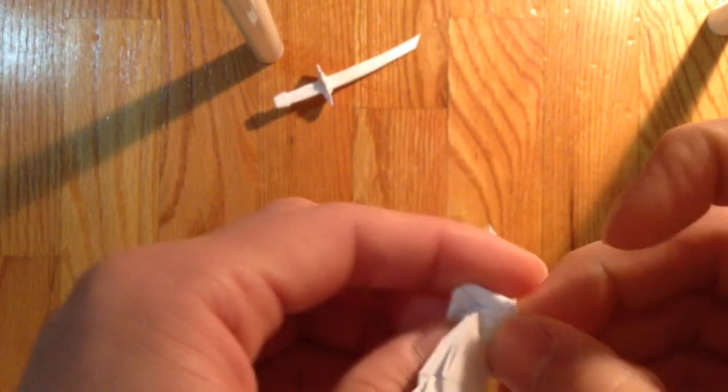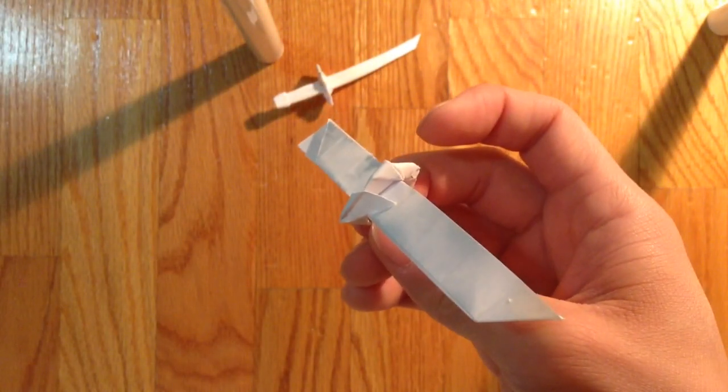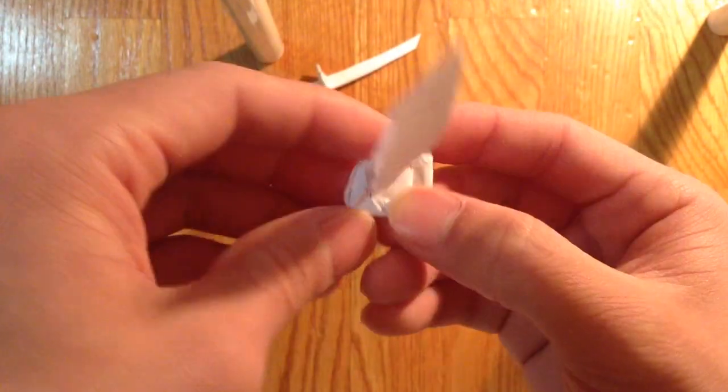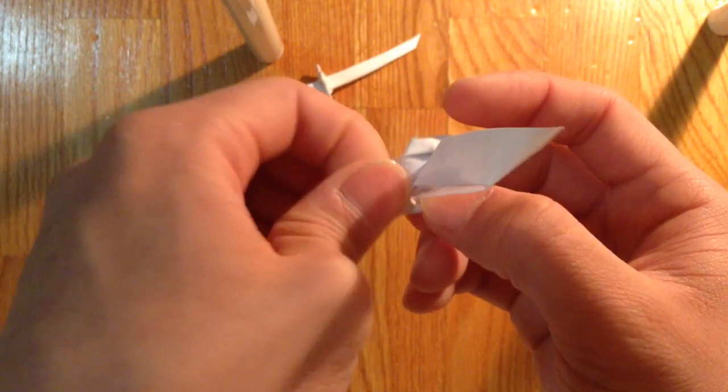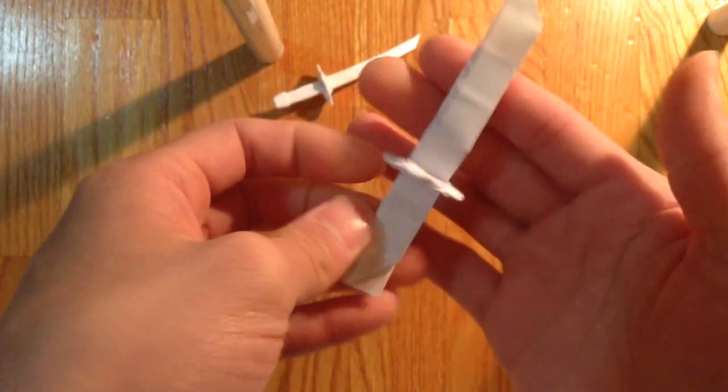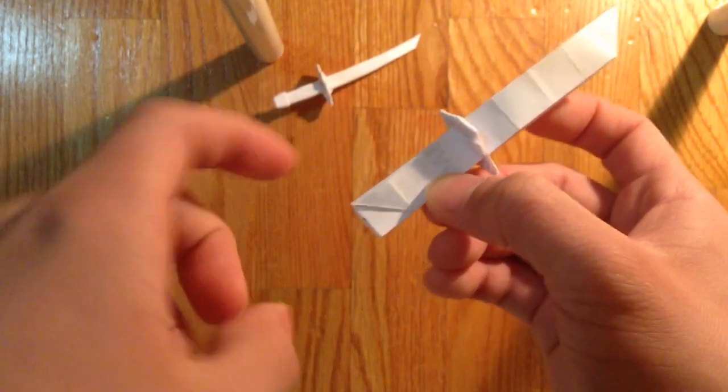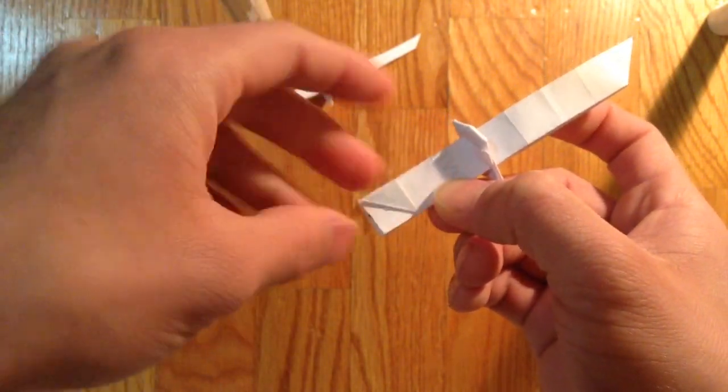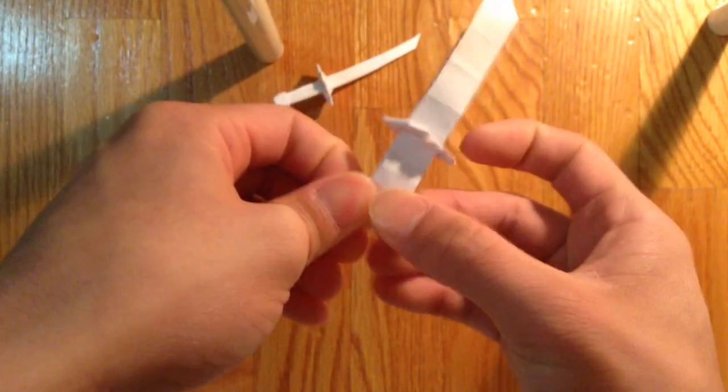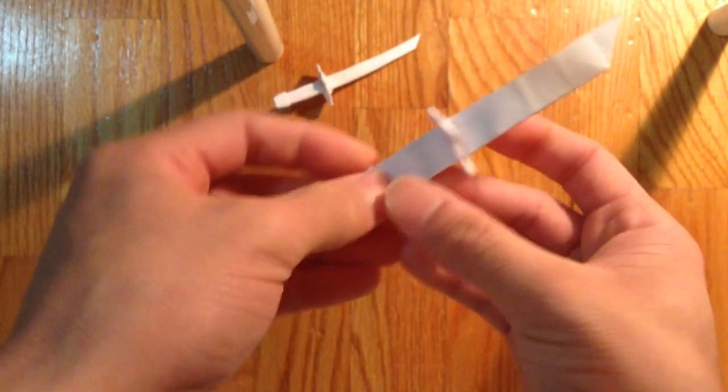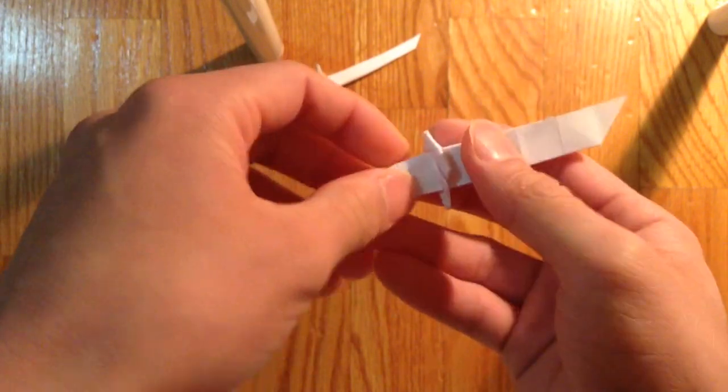You might want to tape it a little if you like. Same thing here. Like that. And you want to fold just the bottom square in half. You see that crease line there? Just fold it in half.